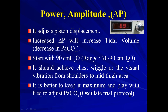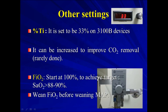In the OSCAR trial protocol, they decided to keep the power at maximum — 90, for example. If the patient is having issues with CO2 ventilation, you play with the frequency up and down. Regarding other settings, the percent of inspiratory time is set to 33% on the 3100P device. It can be increased to improve CO2 removal, though this is rarely done in real life. For FiO2, we start with 100% to achieve a target saturation of more than 88 to 90% in ARDS patients. When weaning, we wean FiO2 first, then start weaning the mean airway pressure.